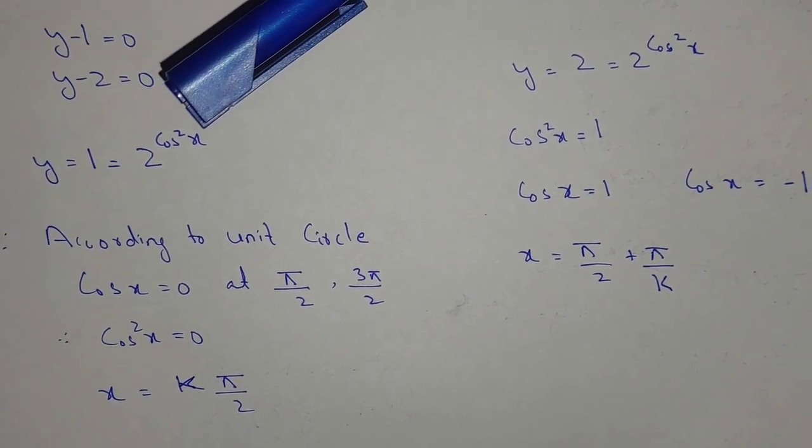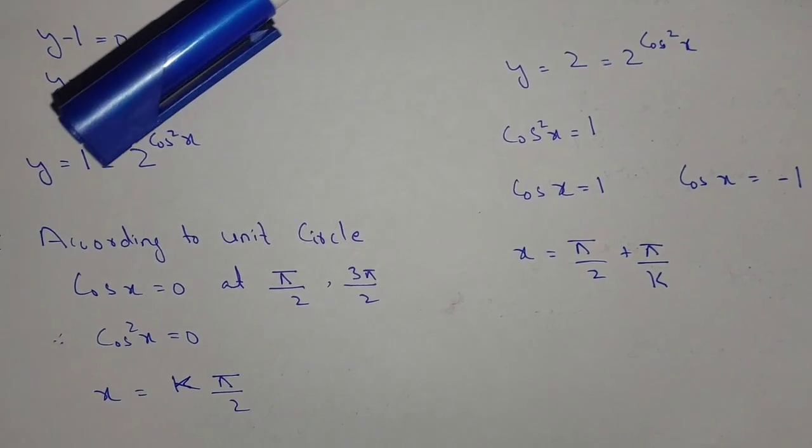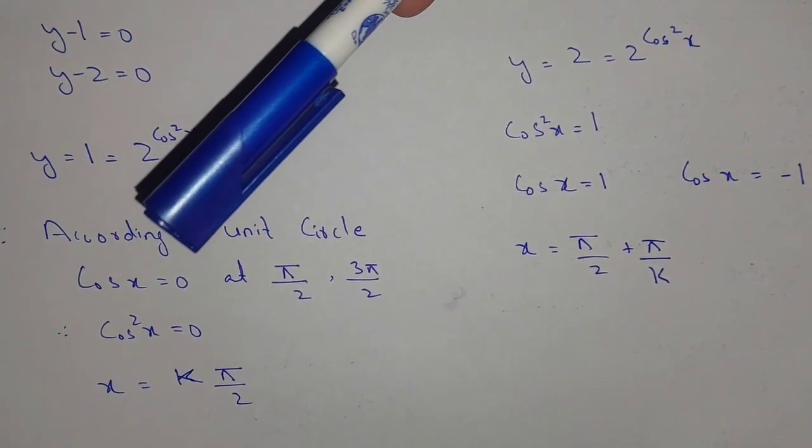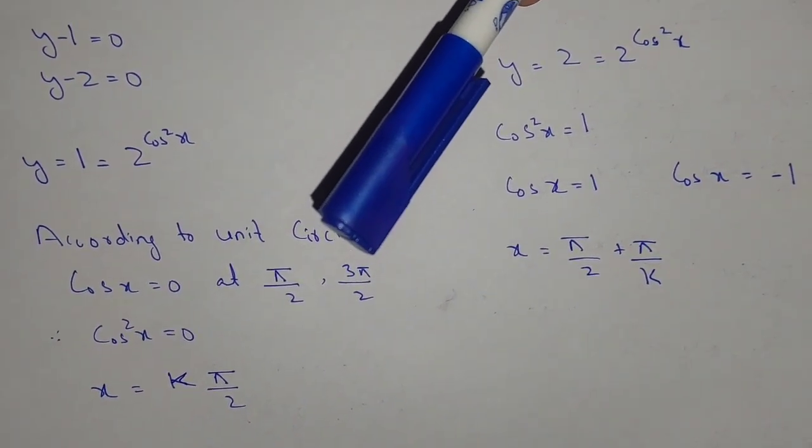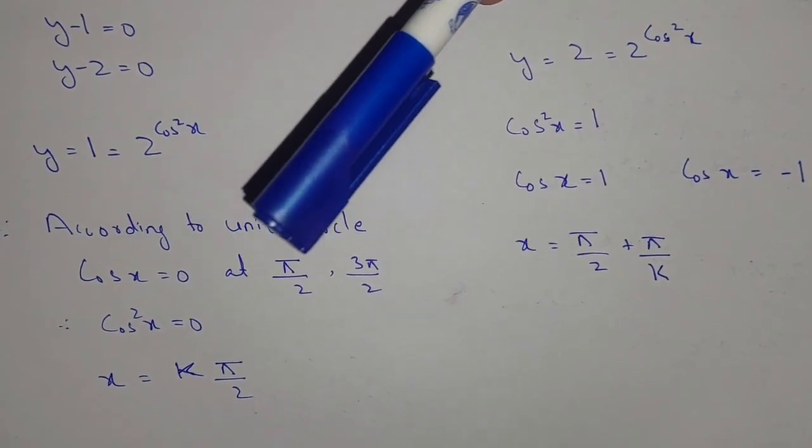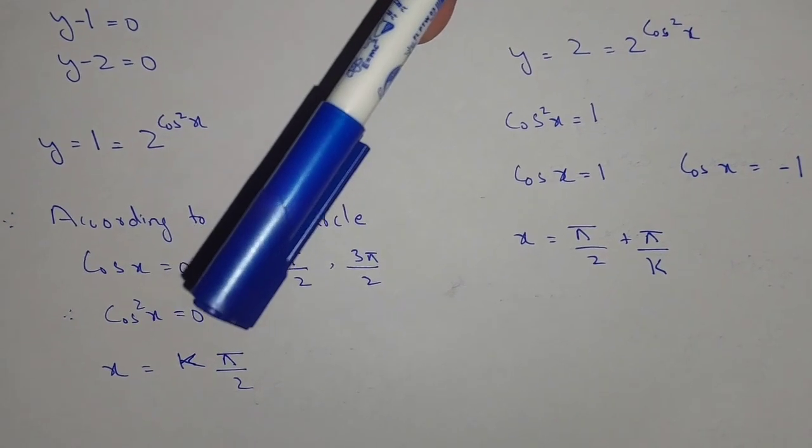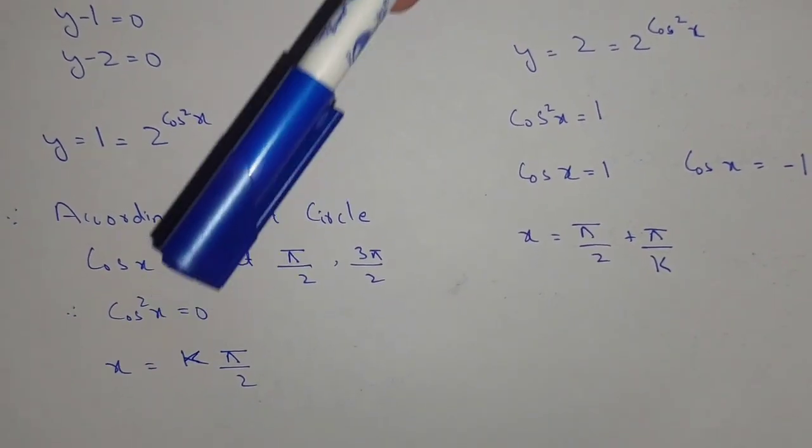From the first equation, y = 1 = 2^(cos²x). Replacing the value of y, according to the unit circle when cos x = 0, we have π/2 and 3π/2. So we can say that x = k·π/2, where k is an integer.